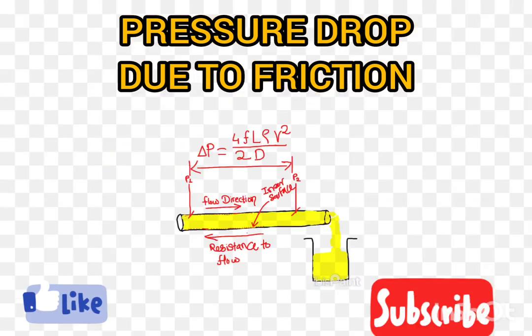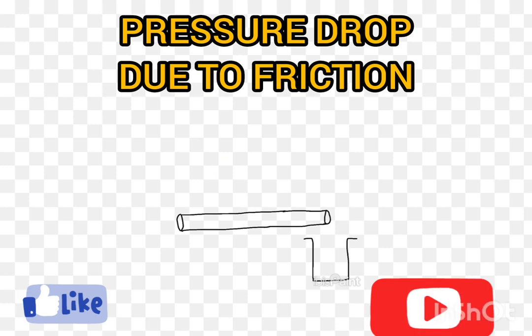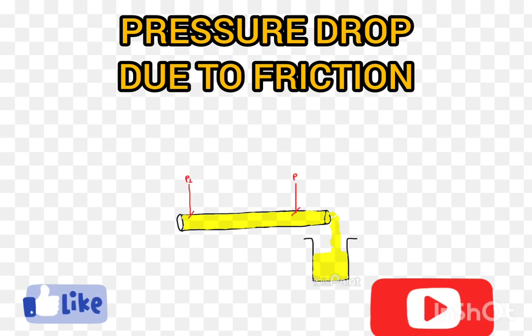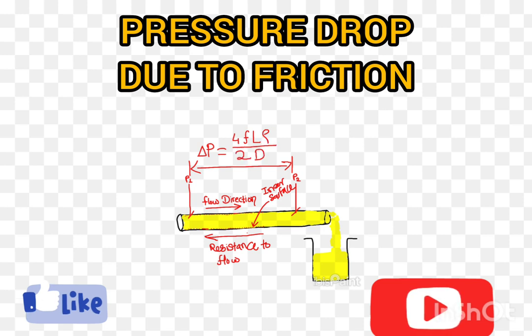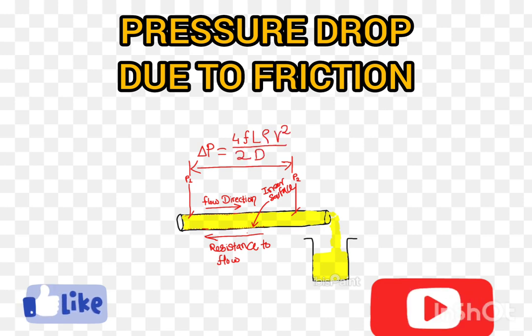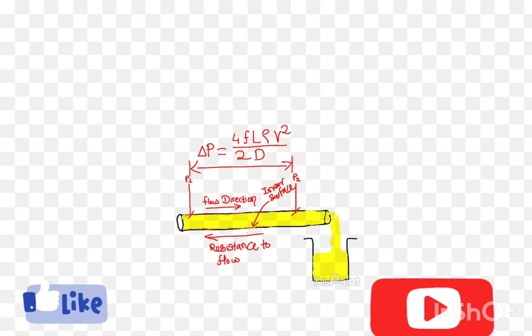Pressure drop due to friction occurs as fluid flows through a pipe. It is primarily caused by the friction between the fluid and the inner surface of the pipe. The friction results in energy losses and a decrease in pressure as the fluid moves from one point — point A — to another point B in the pipe.